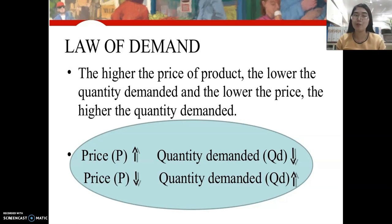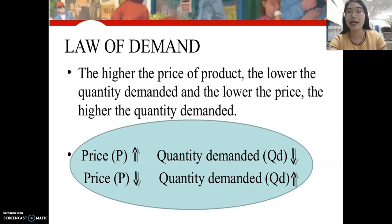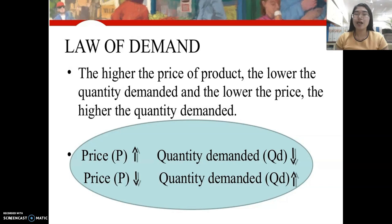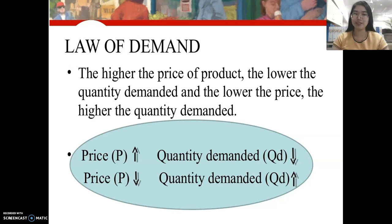For example, if the price of rice is 45 pesos per kilo, the tendency of the consumer is to buy less of the product. Conversely, if the price of rice is only 20 pesos, the tendency is to buy more of the product. This illustrates the inverse relationship in the law of demand.